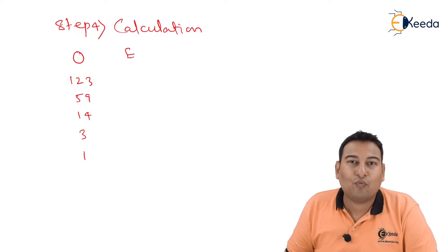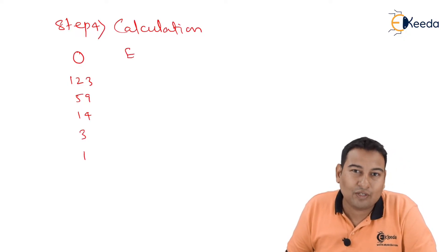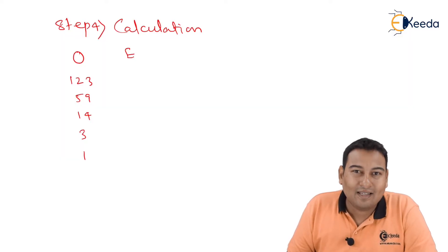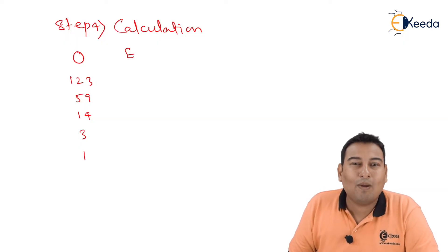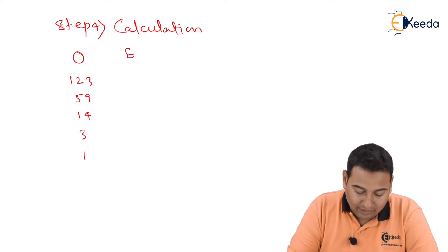Expected we need to find it out by using Poisson distribution. I am not finding again, you can refer Poisson distribution problem number six. Go back to that video and check how to find out the expected frequency values.